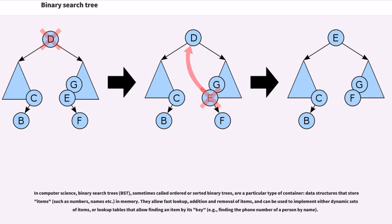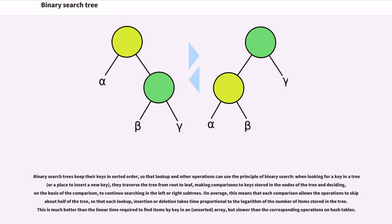They allow finding an item by its key, for example finding the phone number of a person by name. Binary search trees keep their keys in sorted order so that lookup and other operations can use the principle of binary search when looking for a key in a tree or a place to insert a new key. They traverse the tree from root to leaf, making comparisons to keys stored in the nodes of the tree and deciding on the basis of the comparison to continue searching in the left or right subtrees.